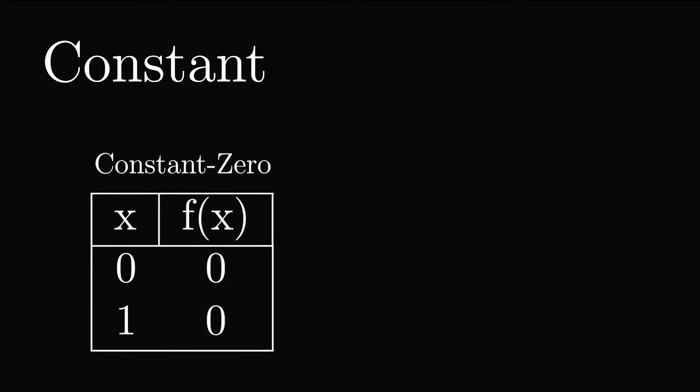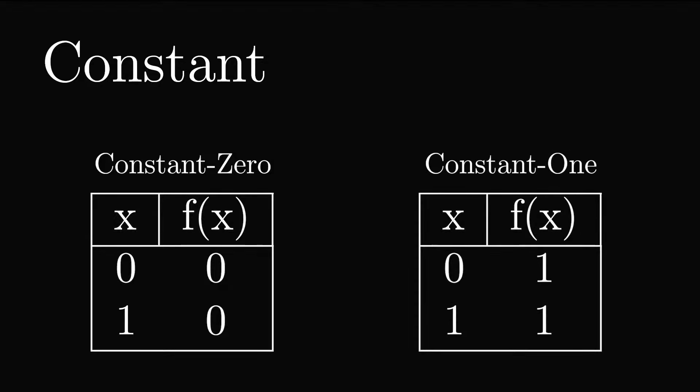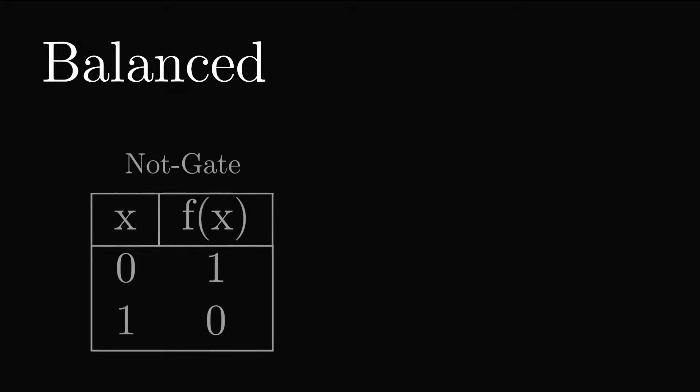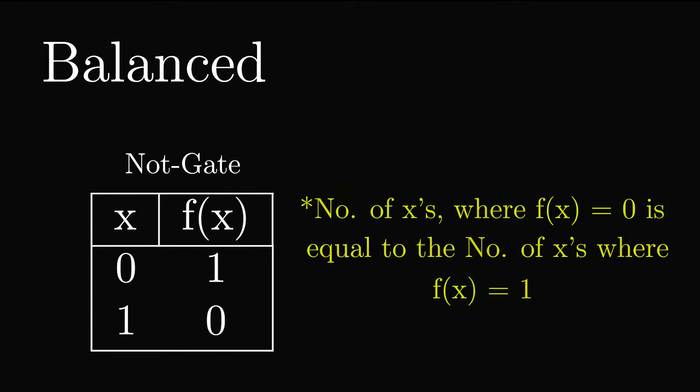If a function is constant, then the output is always the same no matter the input. Here is a truth table for the constant function constant 0, which always returns 0. There is also constant 1, which always returns 1. Balanced functions, on the other hand, return 0 half the time and 1 half the time. If we look at the NOT gate truth table, it is balanced, since it returns 0 for one input and 1 for another. The number of inputs resulting in 0 is equal to the number of inputs resulting in 1.